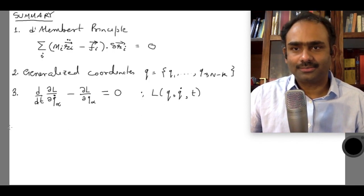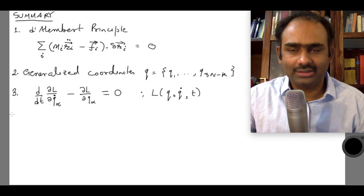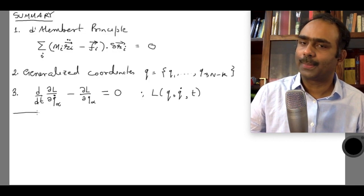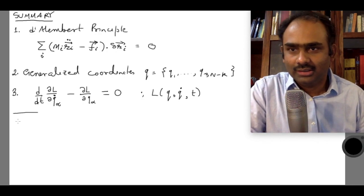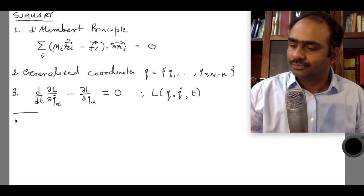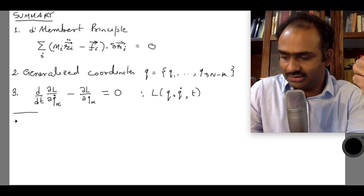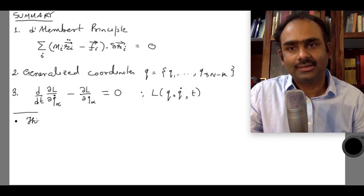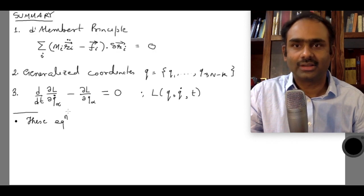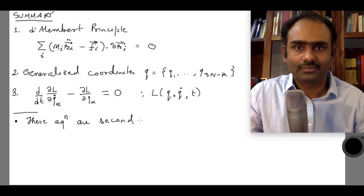Let us make some observations. Up to here is what we have done, and we took some examples. Point number one: note that these Euler-Lagrange equations are second order differential equations.